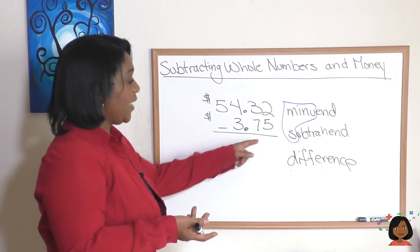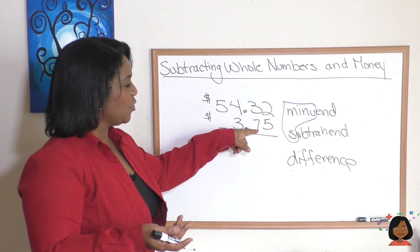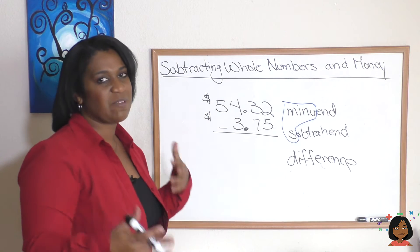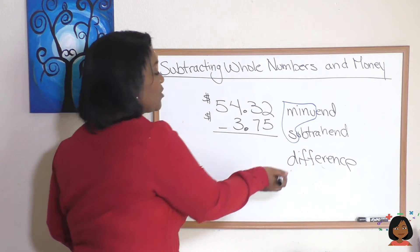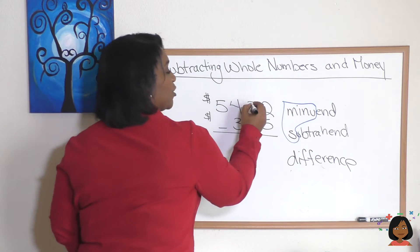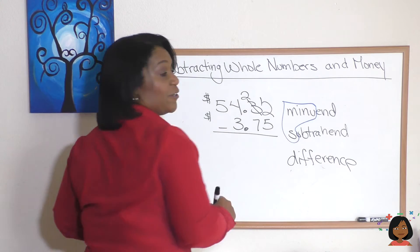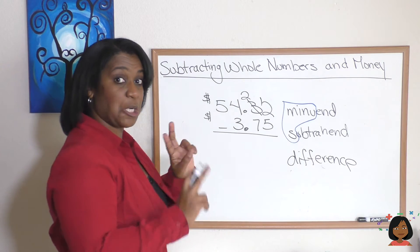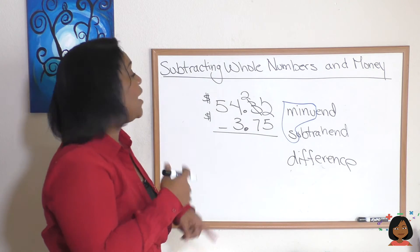You're going to notice right away we've got a bit of an issue. Can we subtract 5 from 2? We don't seem to have enough. So in math we do something called borrowing. I'm going to borrow technically 10 from my 3, cross this 3 out, make this a 2, and bring a 1 over to my 12. So I've borrowed 10 because really this 3 is a 30.